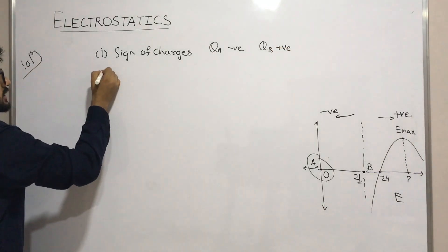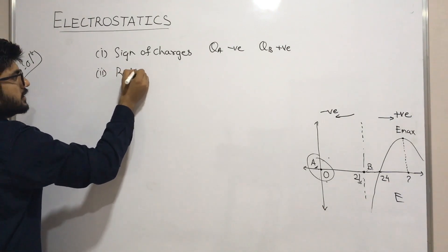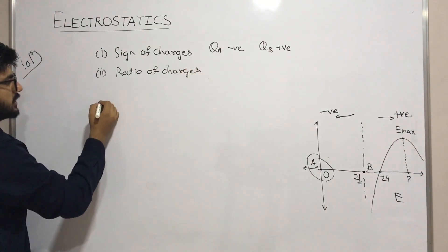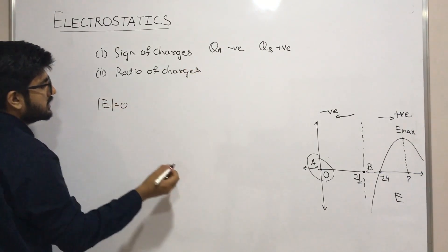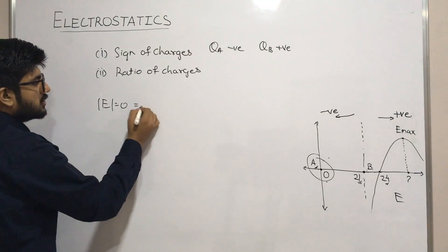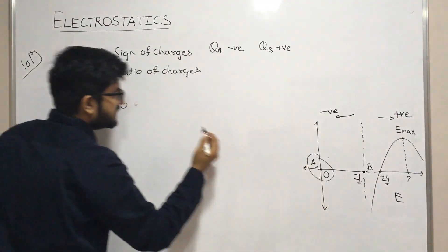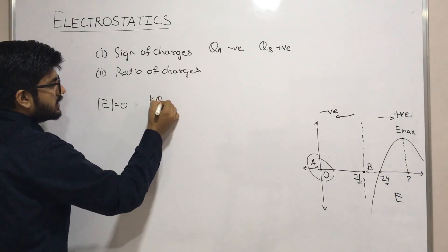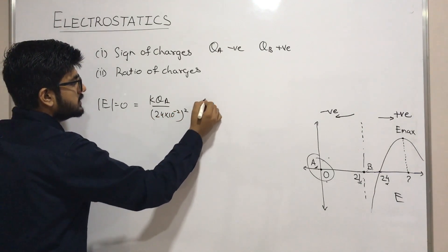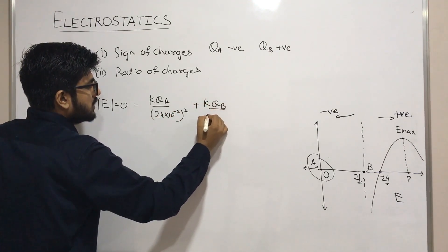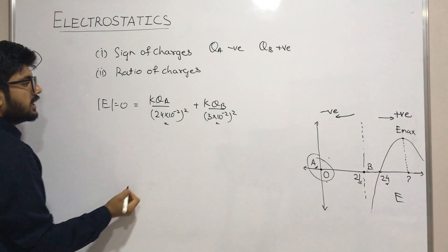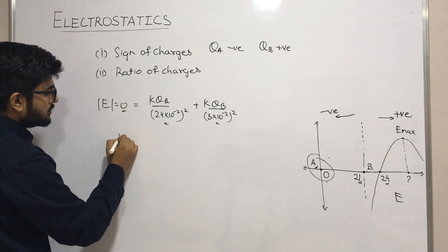Now let's see the second question: the ratio of charges. How will we get the ratio? We have seen the electric field magnitude at one place, and we have been given the point coordinates. That is 24 cm, so the distance from qa is 24 cm and from qb is 3 cm. So we can write: k·qa upon (24×10⁻²)² plus k·qb upon (3×10⁻²)² equals zero, where rb and ra are those distances.